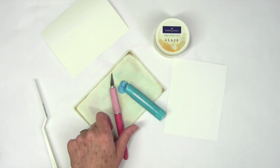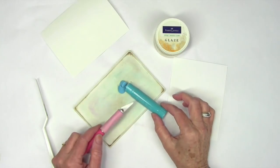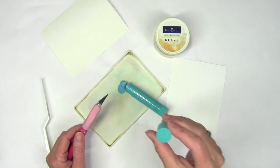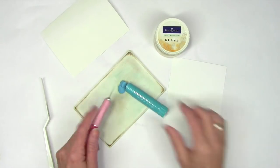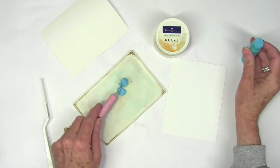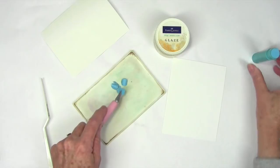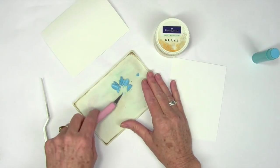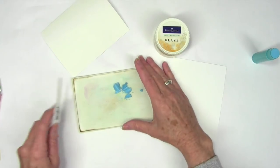I'm going to start off making a background with my Double Scoop Gelatos. This color is called Snow Cone and I've shaved off some of my Gelatos using my X-Acto knife. I'm going to create a glaze to put on the background of my card.